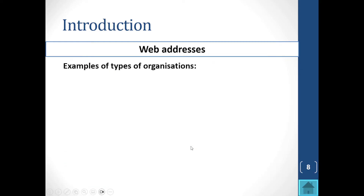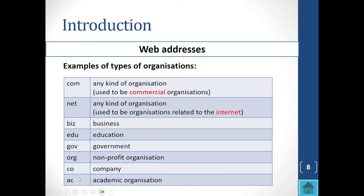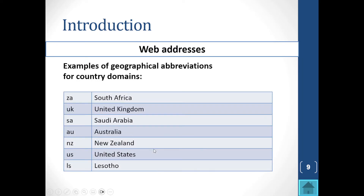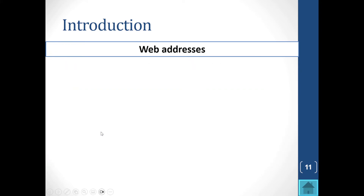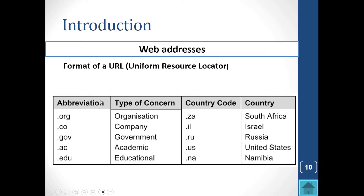The domain extensions indicate the type of organization: .com is a commercial organization, .biz is a business, .gov is a government website, .edu is an educational website, .co is a company, and .ac is an academic organization. You must know these — they usually ask two or three in tests and exams. Geographical abbreviations include .co.za for South Africa, .co.uk for the United Kingdom, and .co.au for Australia.